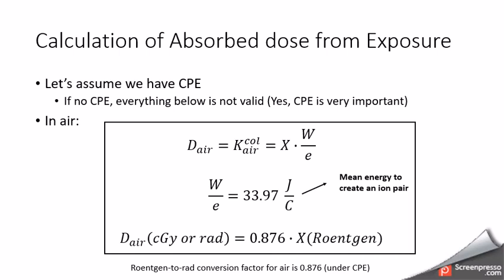So in air, the dose equals the exposure multiplied by this W over E factor. This value is the mean energy to create an ion pair. It is 33.97 joule per coulomb.